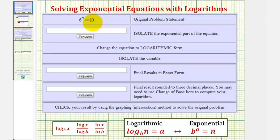So for an equation like this, the first step is to isolate the exponential part, which would be 6^x. Notice for this equation the exponential part is already isolated. So in this first cell, we'll enter the same equation again: 6^x = 10.